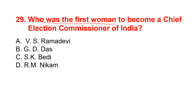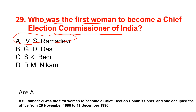Who was the first woman to become a Chief Election Commissioner of India? This question has been repeatedly asked in many competitive exams. V.S. Ramadevi was the first woman to become the Chief Election Commissioner of India — the correct option is option A. She occupied the office from 26 November 1990 to 11 December 1990, meaning her tenure was very short — she held the office for only 15 days.